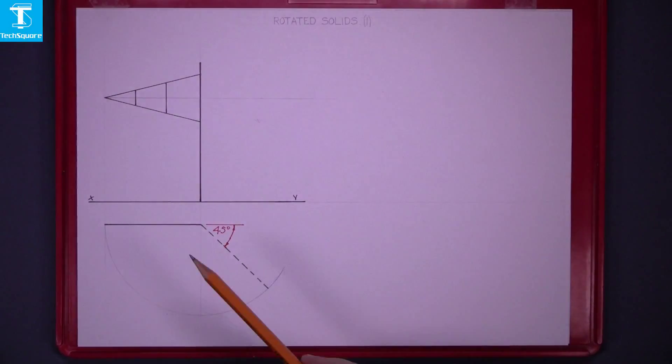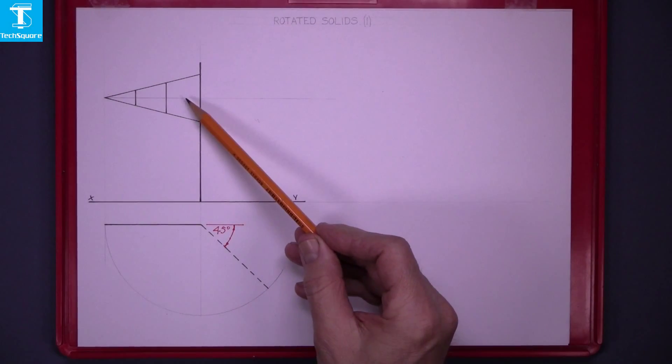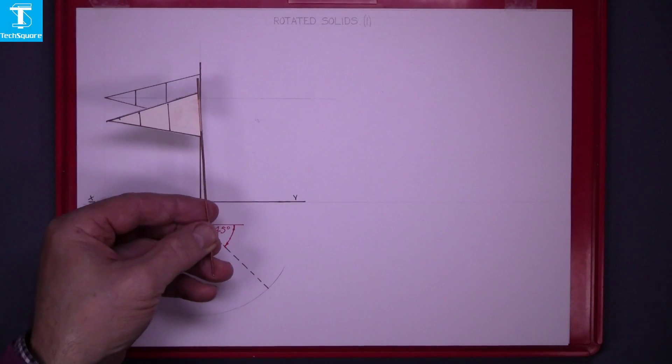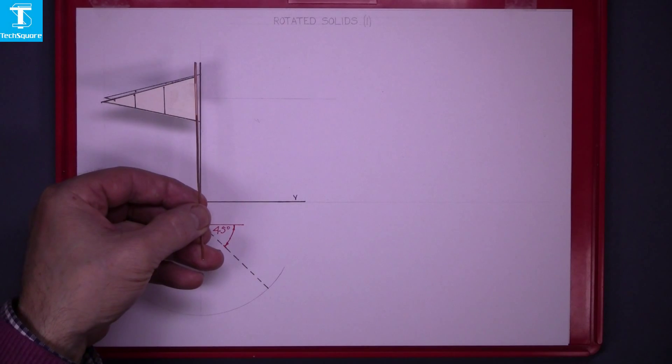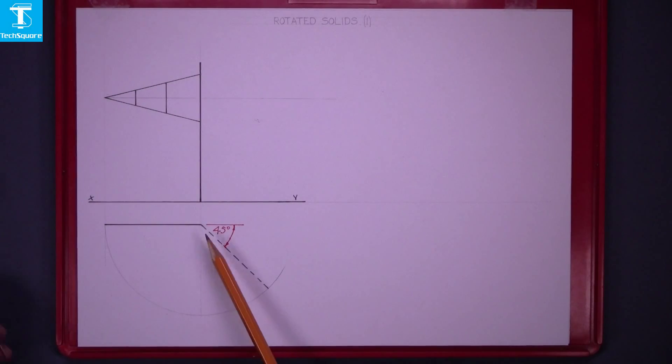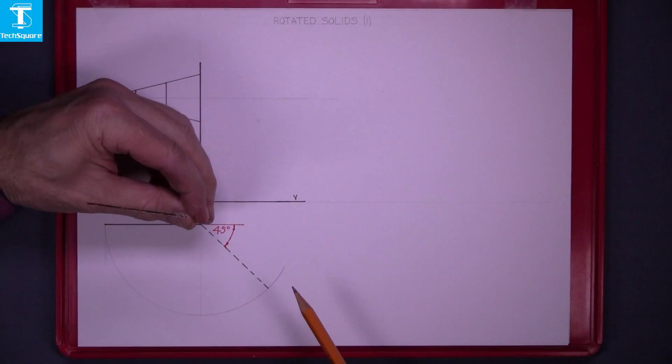Rotation of solids 1. Given the elevation of the flag, this is the model of the flag and this is the plan of that flag looking directly down on top of it.